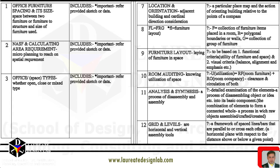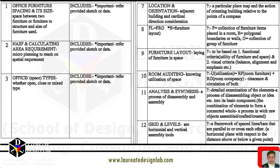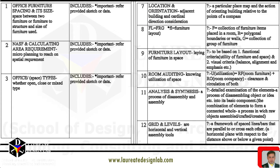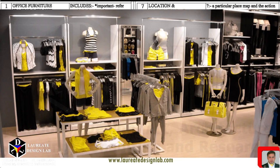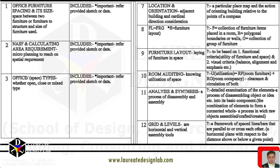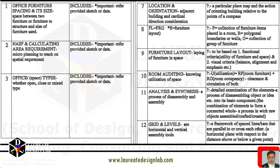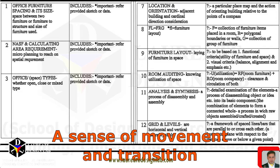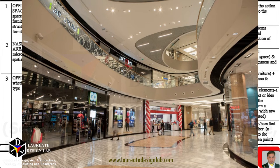In interior design and architecture, a bay is a unit of measurement used to organize a space using a grid system. Bays function as a basic modular unit that can be used to divide and organize a space. The size and scale of the bay can be adjusted to suit the specific needs of the space. For example, in a retail store, bays can be used to create different product displays, with larger bays for main displays and smaller bays for secondary displays. In a residential space, bays can create distinct living areas, with larger bays for the living room and smaller bays for bedrooms. Bays can also be used to create a sense of movement and transition within a space, such as larger bays for public spaces and smaller bays for private spaces.